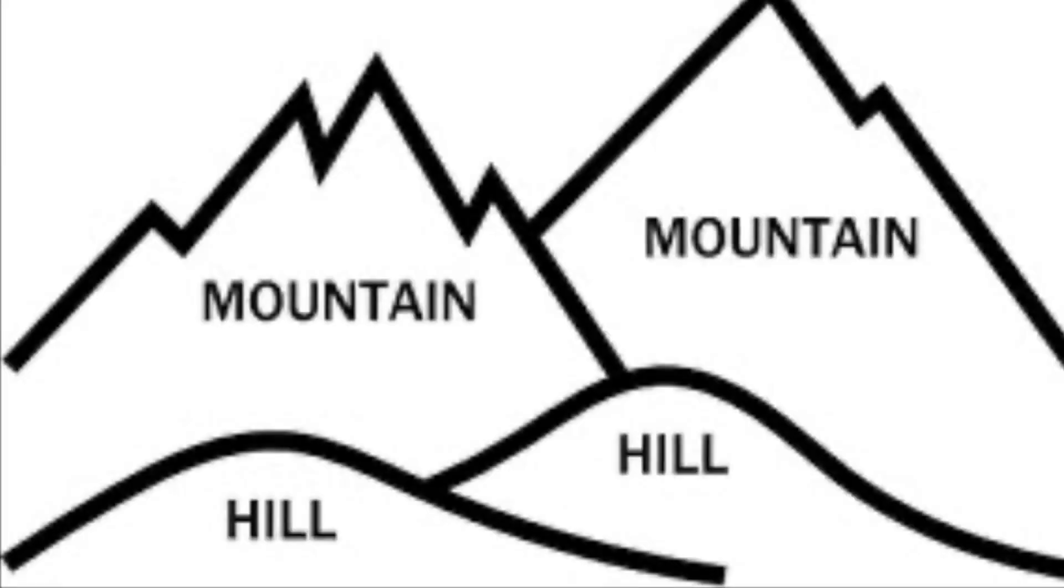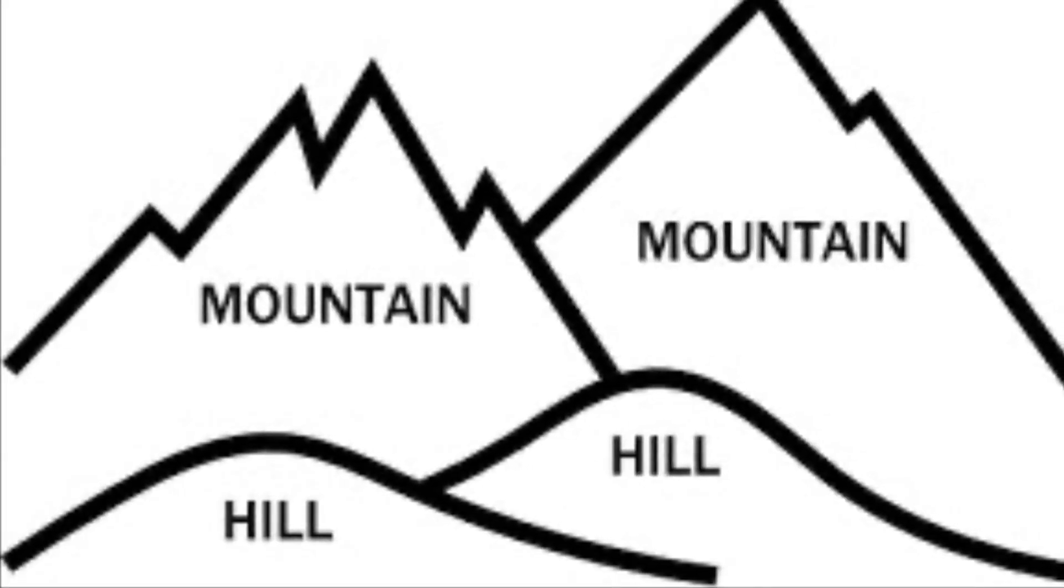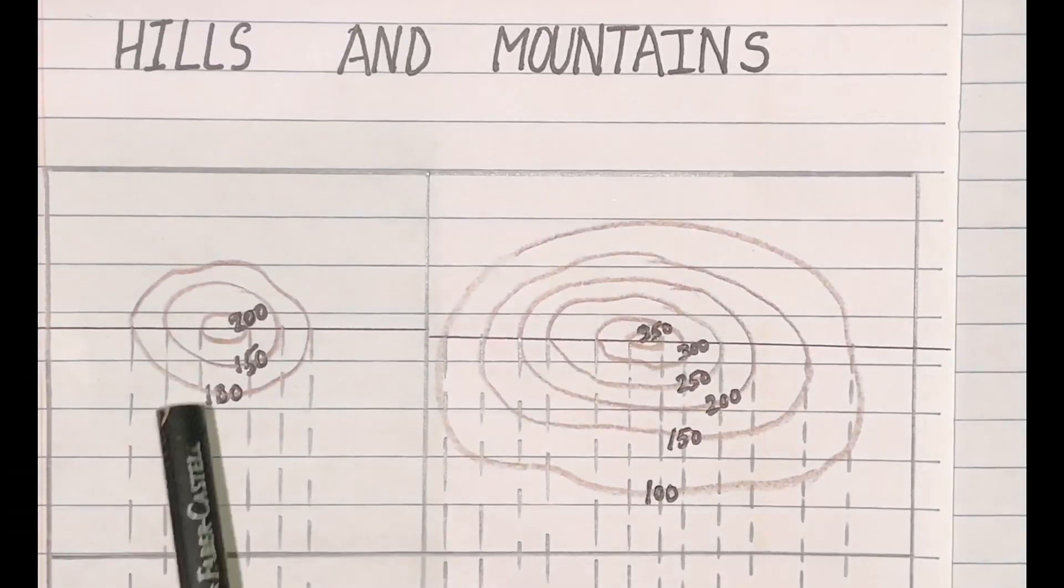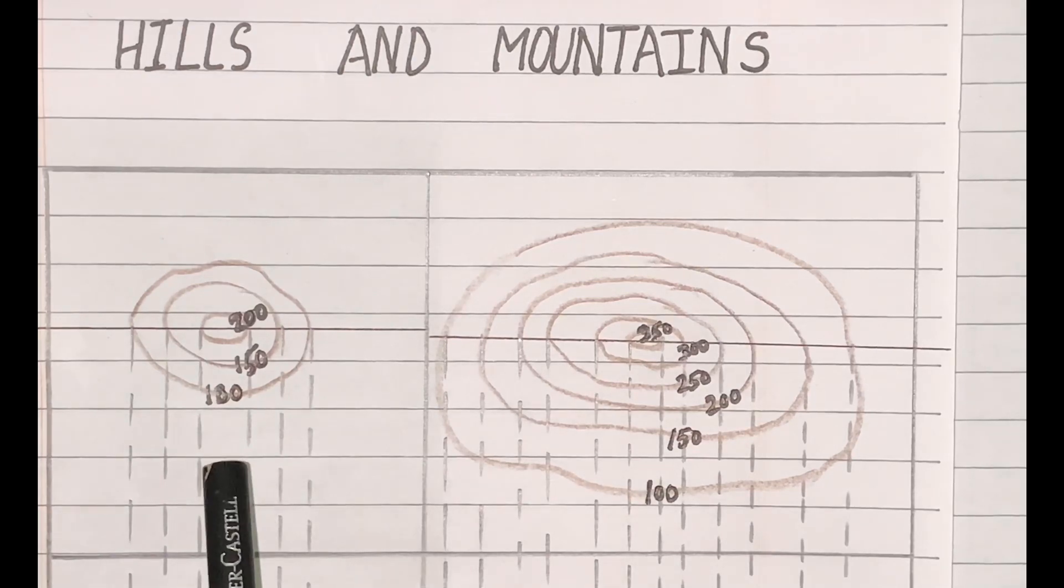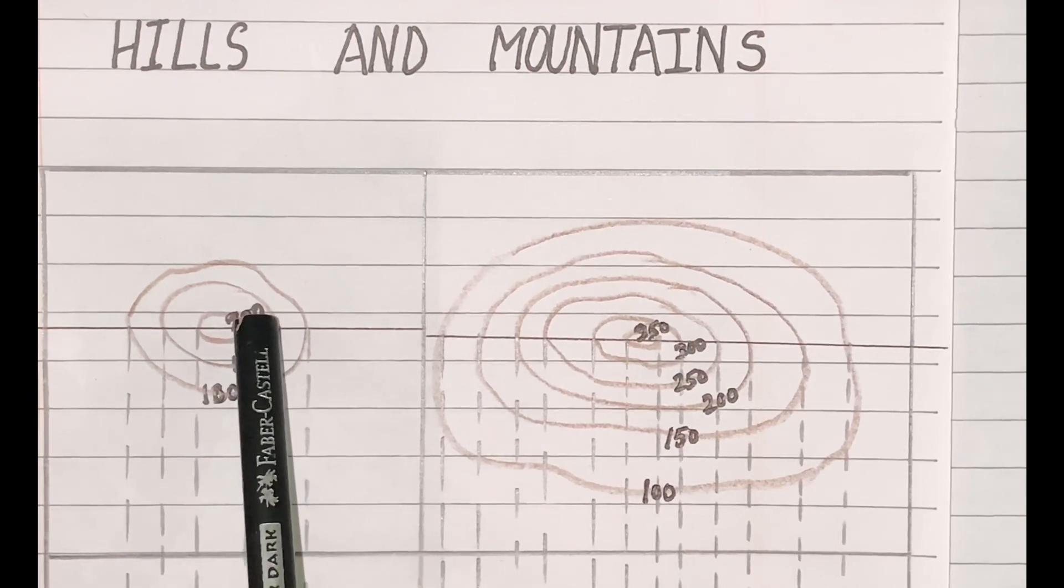Now the question is, how are these two features depicted on a topographical map? I have drawn two diagrams to show how hills and mountains are depicted. In the first diagram, you will see the contour starting from 100, 150, and 200 is the highest point.